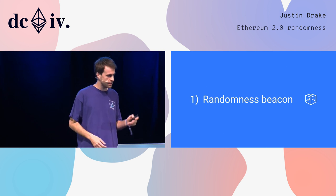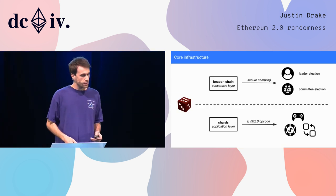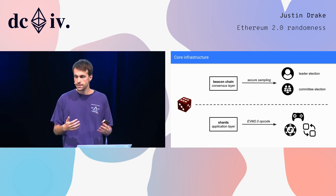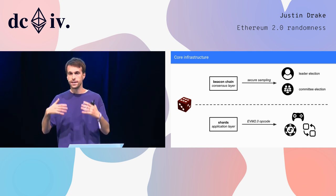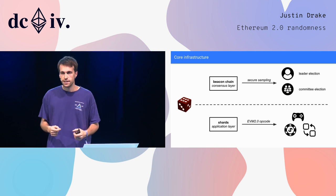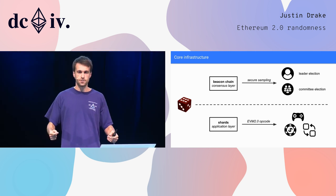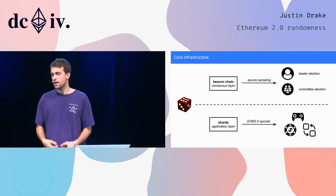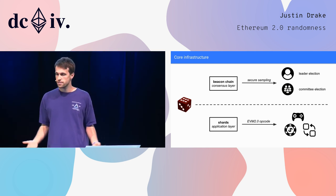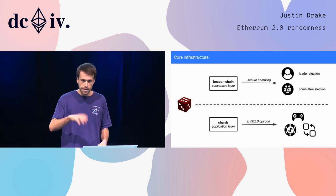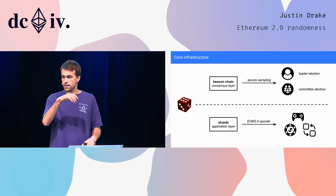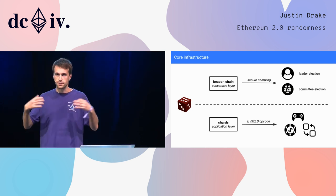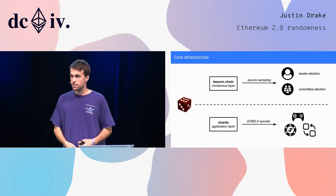We use randomness in two different places. We use it at the consensus layer in the beacon chain, where we're doing secure sampling of validators. We have this huge pool of validators, each with 32 ETH — that could be 100,000 or even millions of validators — and we're basically sampling what we call leaders and committees, which is part of the process of Ethereum 2.0.